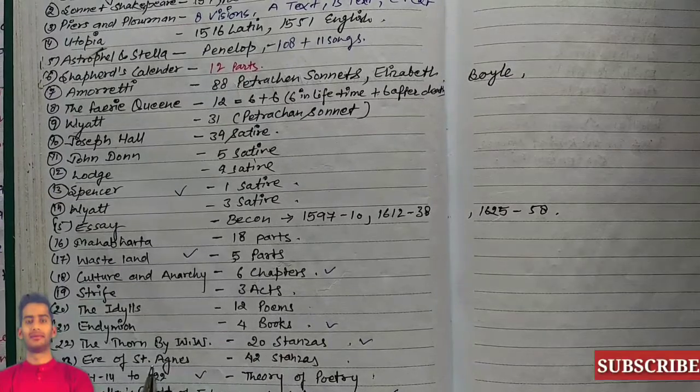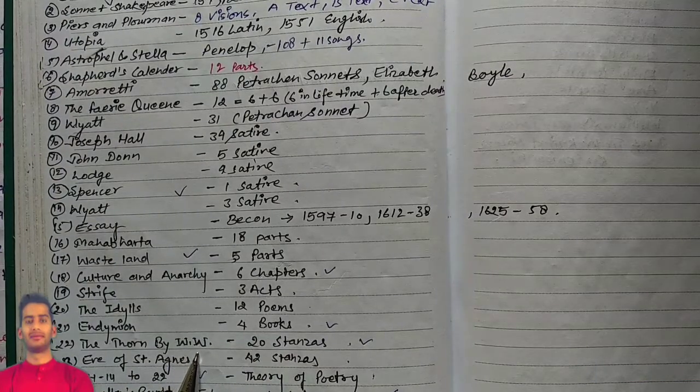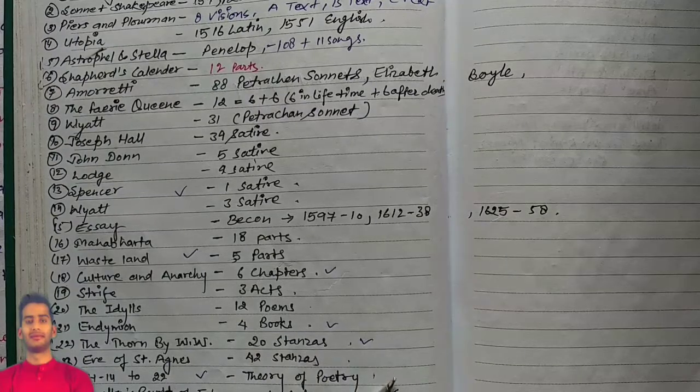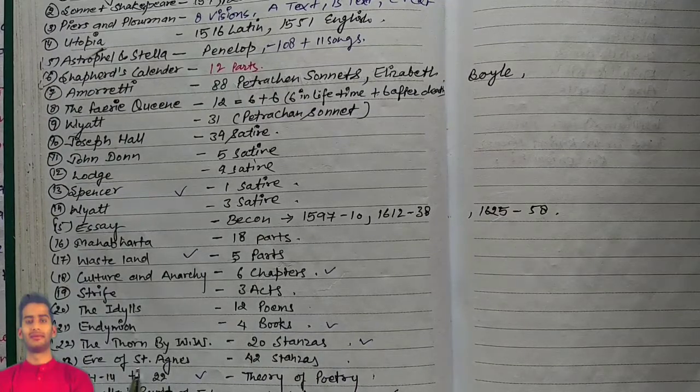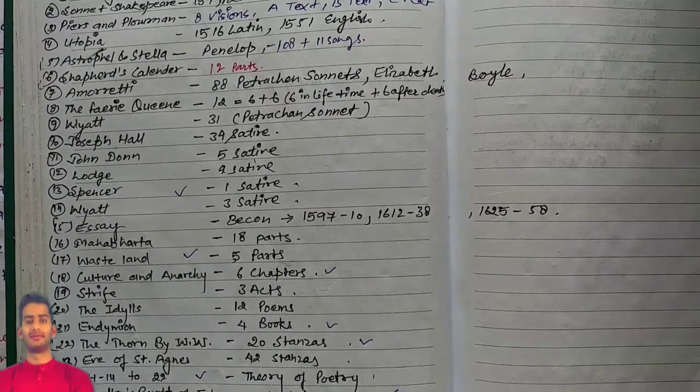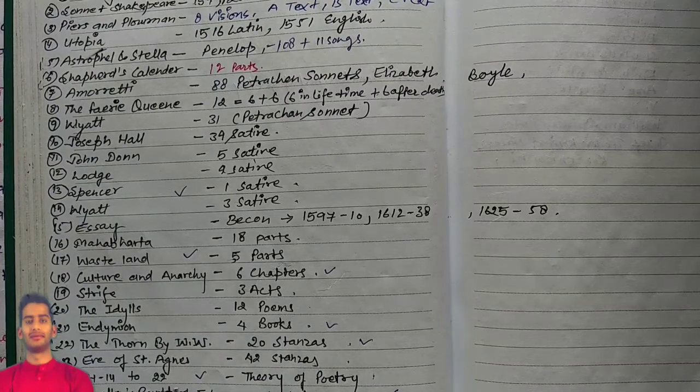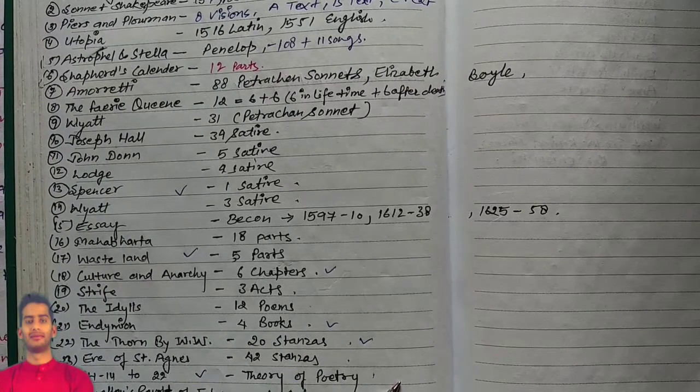The Thorn by William Wordsworth has 20 stanzas. Eve of Saint Agnes has 42 stanzas. Chapter 14 to 22: theory of poetry by Coleridge in his works Biographia Literaria.